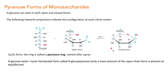When this aldehyde group reacts with the fifth carbon hydroxyl group, it gives a cyclic structure. The oxygen attacks carbon 1, because oxygen has an active negative charge and carbon 1 has a partial positive charge, giving you the closed form. This closed form is called the pyranose ring, because pyran is a six-membered cyclic structure containing one oxygen. D-glucose exists mostly in the closed ring structure; only a very small trace amount of open chain is present at equilibrium.